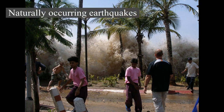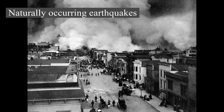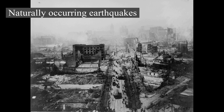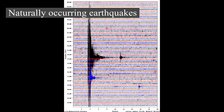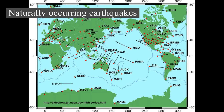Naturally occurring earthquakes: Tectonic earthquakes occur anywhere in the Earth where there is sufficient stored elastic strain energy to drive fracture propagation along a fault plane. The sides of a fault move past each other smoothly and seismically only if there are no irregularities or asperities along the fault surface that increase frictional resistance. Most fault surfaces do have such asperities, which leads to a form of stick-slip behavior. Once the fault has locked, continued relative motion between the plates leads to increasing stress and stored strain energy around the fault surface. This continues until the stress has risen sufficiently to break through the asperity, suddenly allowing sliding over the locked portion of the fault, releasing the stored energy as radiated elastic strain seismic waves, frictional heating of the fault surface, and cracking of the rock, thus causing an earthquake.